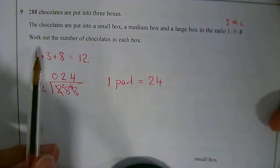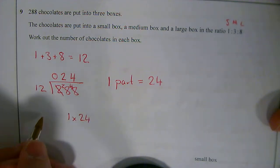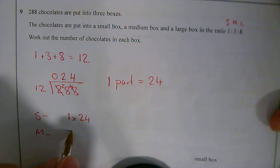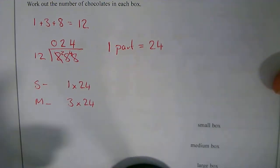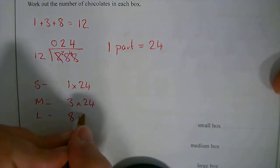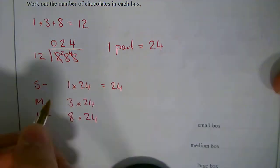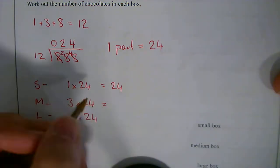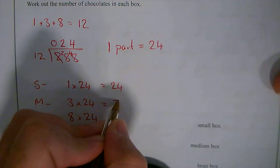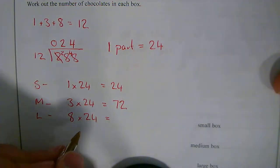I've got 1 part, 3 parts, and 8 parts. So 1 times 24 is the small box. The medium box is 3 times by 24. And then the large box is 8 times by 24. 1 times 24 is 24. 3 times 24 is 72.